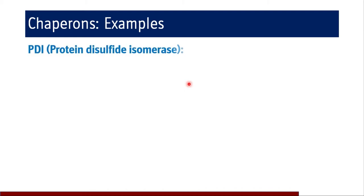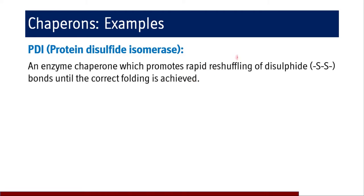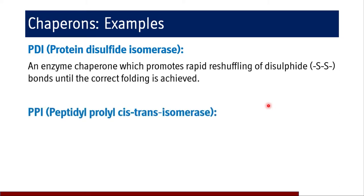Another example is PDI — protein disulfide isomerase. This is an enzyme-chaperone which promotes rapid reshuffling of disulfide bonds until the correct folding is achieved. Since disulfide bonds are required for protein folding, reshuffling them changes the structure and folding of the protein. PDI ensures the correct folding of the protein through this mechanism.